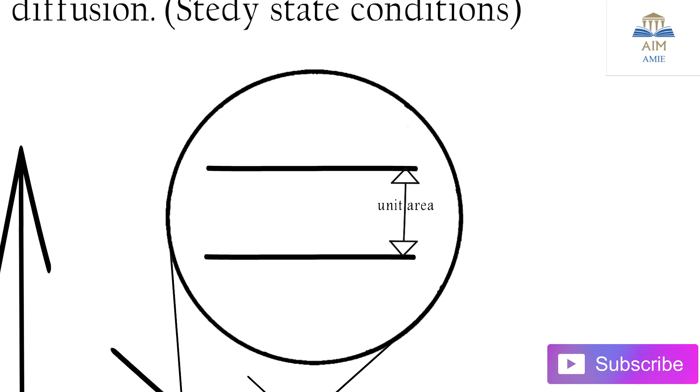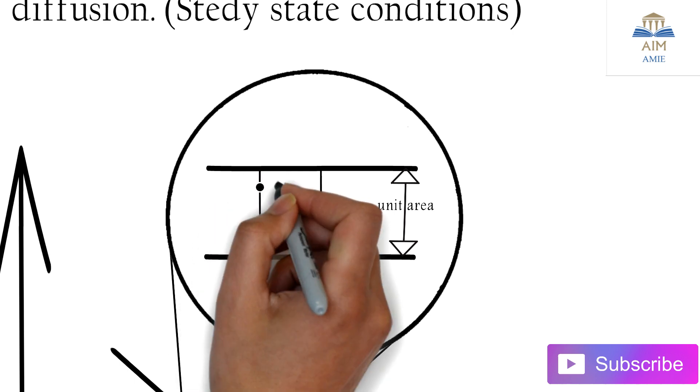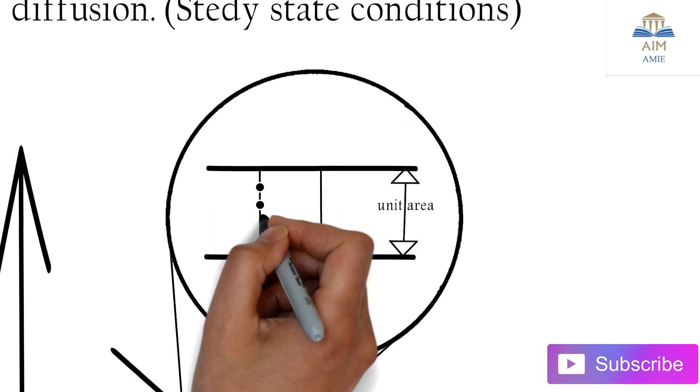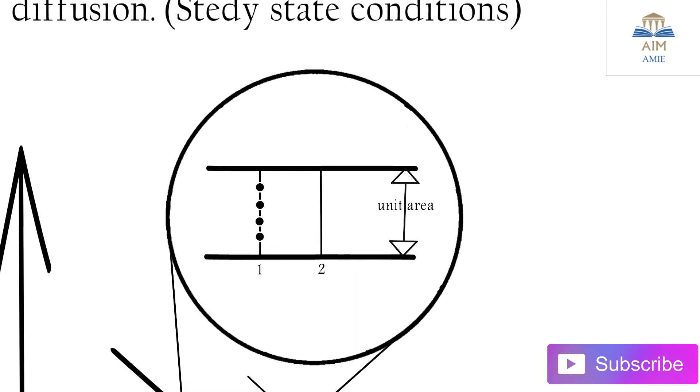In this particular area, we have plane one and another plane which is two, considering there are atoms which are present at plane one and plane two.